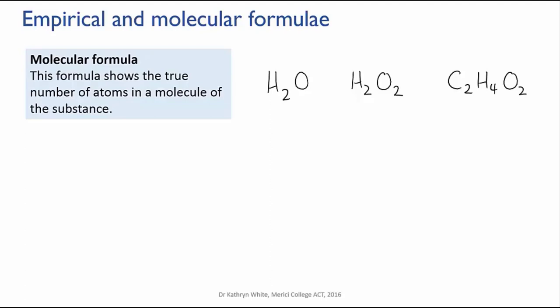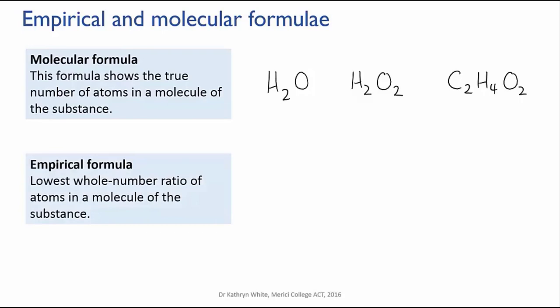So these are molecular formulae. The empirical formula of a compound shows the lowest whole number ratio of atoms in the molecule. For some molecules this is the same as its molecular formula. With water, for instance, we cannot simplify the ratio of hydrogen to oxygen any further, since we have only one oxygen anyway. So the empirical formula of water is still H2O.